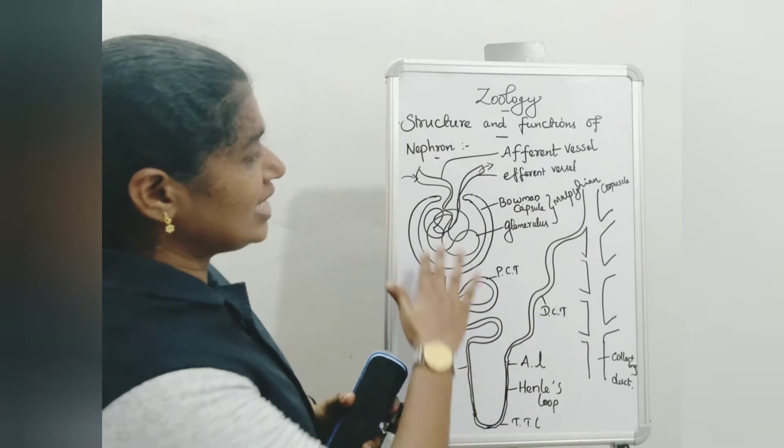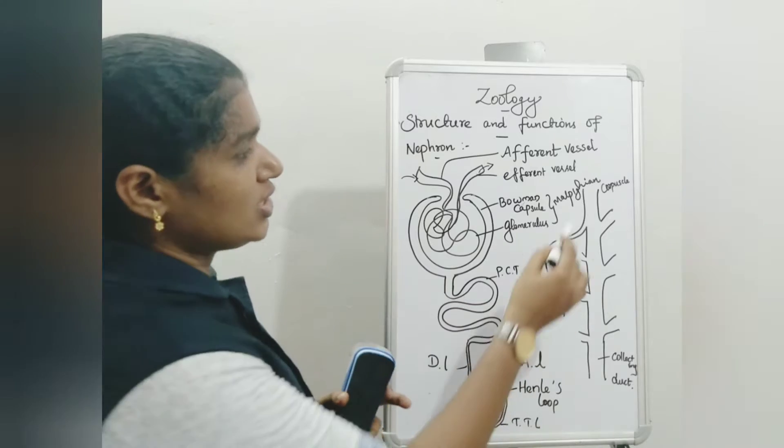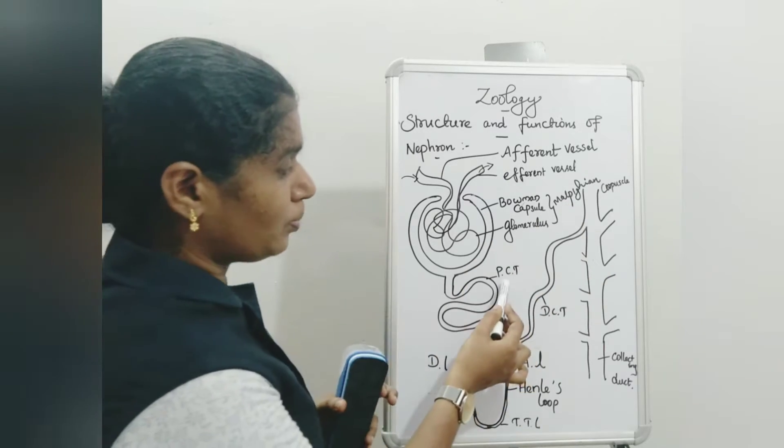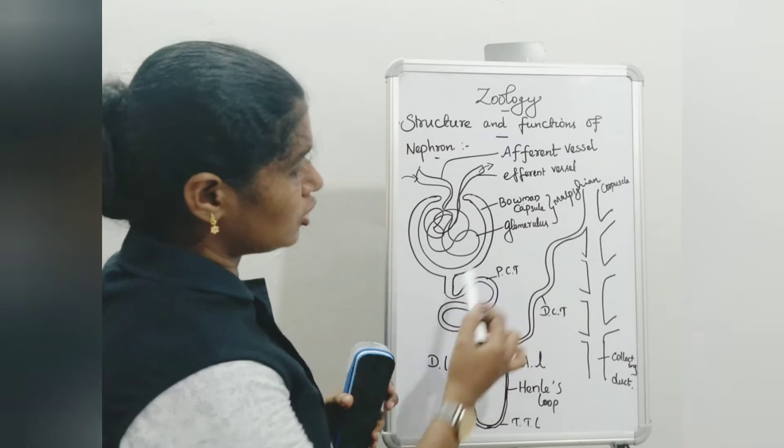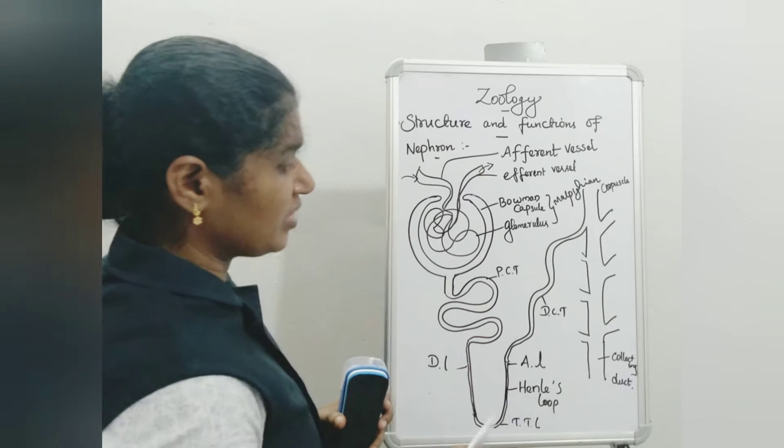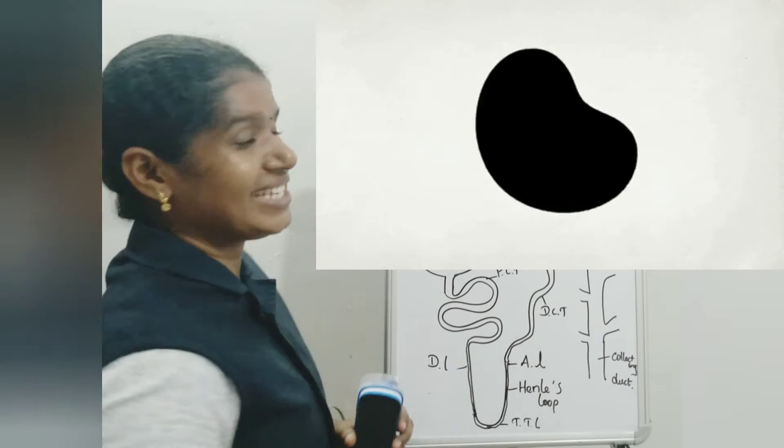Now the nephron is classified into five major parts. First one, Malpighian corpuscle. After, proximal convoluted tubule. Then after, Henle's loop. Distal convoluted tubule. Collecting duct.